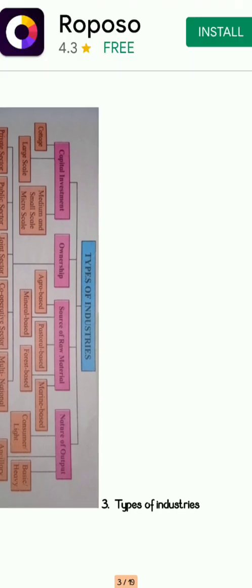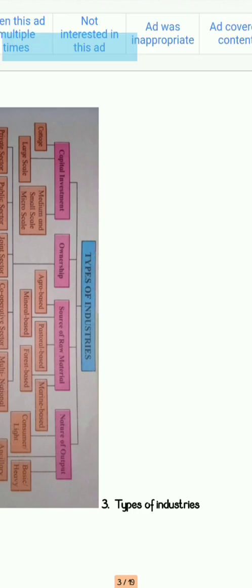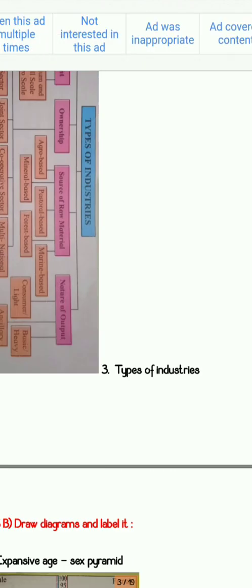Next is the diagram of types of industries. You can see here the types of industries based on capital investment, ownership, source of raw material, and nature of output. These are the different types of industries which you can find here.